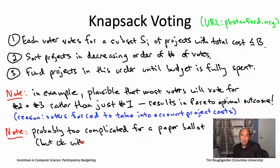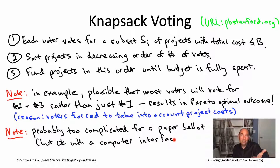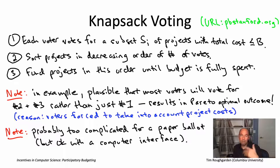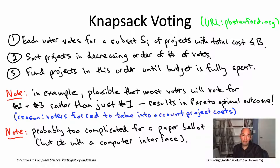Whereas if you're voting by computer, it's very clear — it can just prevent you from casting the vote if you're over budget. It can show you how much budget is remaining and allow you to experiment with toggling projects on or off and explore different possibilities. It's just much easier to imagine knapsack voting working with a computerized voting interface compared to paper ballots.